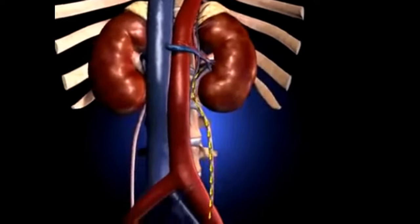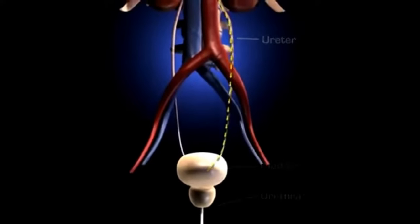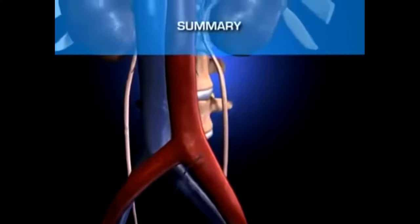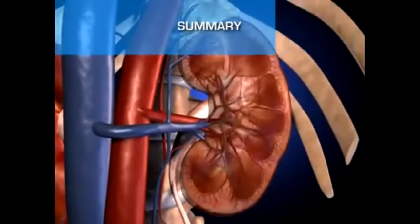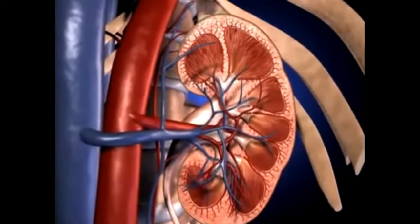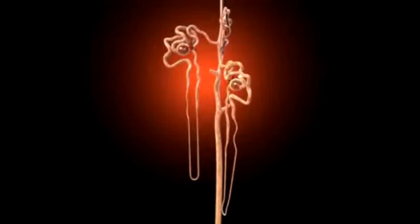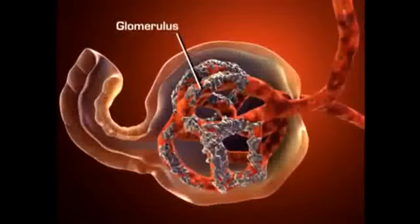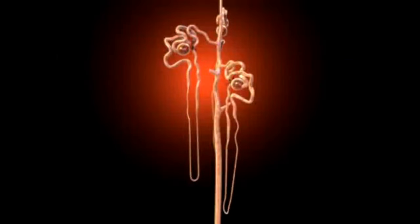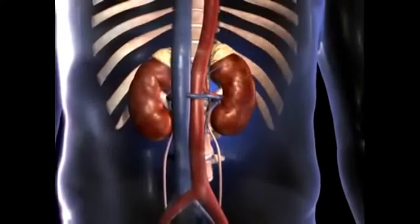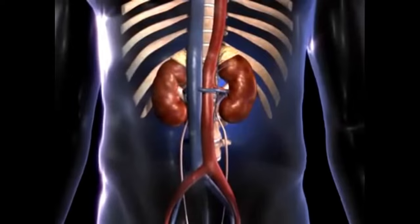The filtrate concentrates in the collecting tubules, then finds its way to the renal pelvis, where it is directed to the ureter, the bladder, and the urethra for elimination. The kidneys perform an excretory function by filtering the blood and selectively reabsorbing materials needed to maintain a stable internal environment. The nephron is the functional unit of the kidney, composed of a glomerulus that filters the blood and a tubular component where necessary substances are reabsorbed into the bloodstream and unneeded materials are secreted into the tubular filtrate for elimination in urine.